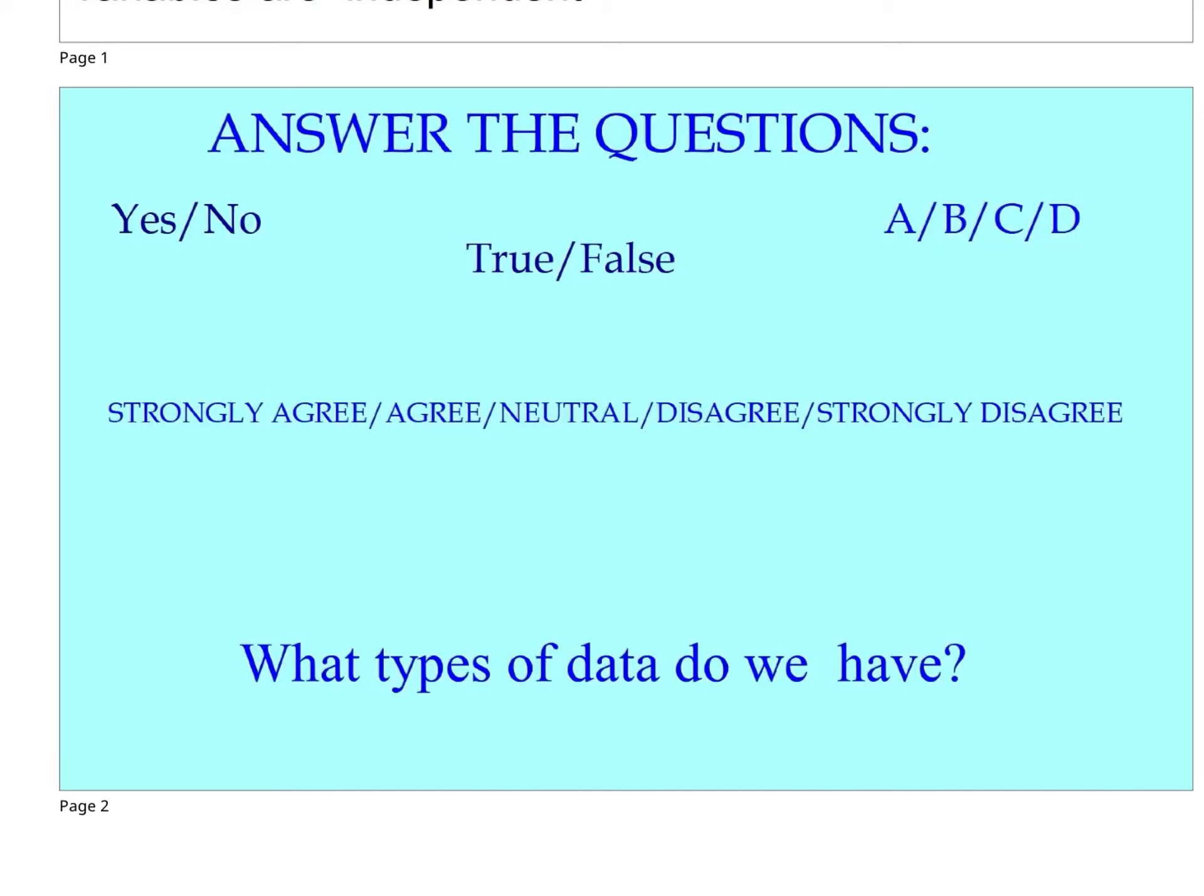If you had to stop and answer any of these questions - yes or no, true or false, strongly agree, agree, neutral, disagree, strongly disagree, also known as a Likert scale - the question I have for you is, what kind of data do we have? Turns out, it's qualitative. And that's how we're going to study our new topic, chi-squares.